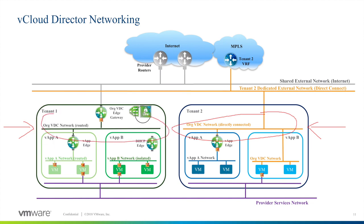The second type is a routed organization network. The organization network is connected to the external network by an NSX edge services gateway, a virtual appliance which provides networking and security services like firewall, NAT, load balancer, VPN connections, etc. On the internal side of the edge gateway, the organization will use a private IP addressing scheme. This is a very common and very secure deployment scenario for vCloud Director organization virtual data centers.